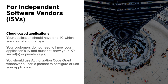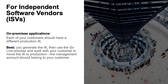These next couple of slides are for independent software vendors. If your software is a cloud-based application, then your application should have one integration key which you control and manage. Your customers do not and should not need to create or manage an IK. Your customers do not need to know your application's IK and must not know your IK secrets or private keys. You should use authorization code grant whenever a user is present to configure or use your application. If your application is installed on-premises, then each of your customers should have a different production IK. The best option is for you to generate the IK, then use the go-live process and work with your customer to move the IK to production.